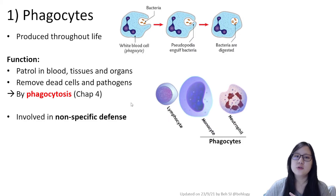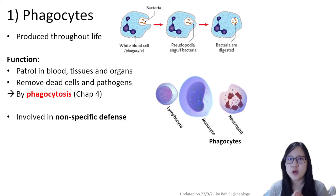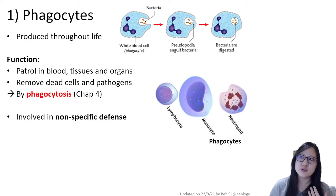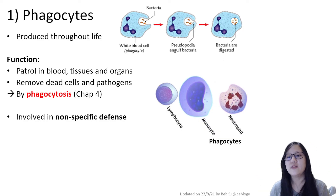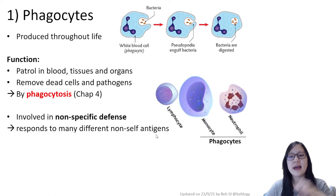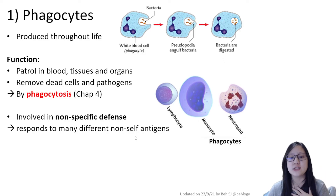Phagocytes are involved in non-specific defense — they engulf anything that is non-self. Your own cells have markers which are glycoproteins, proteins, or glycolipids specific to your cells. If there are pathogens, dead cells, or cancer cells that don't have the same markers, we say they have non-self antigens, also made of glycolipids, glycoproteins, or proteins.